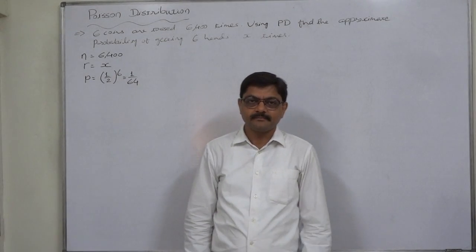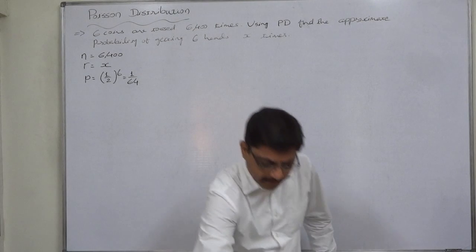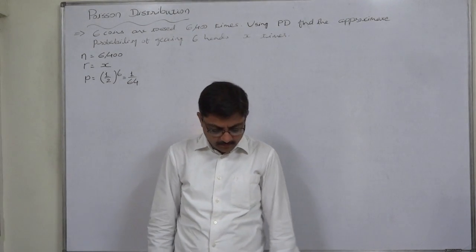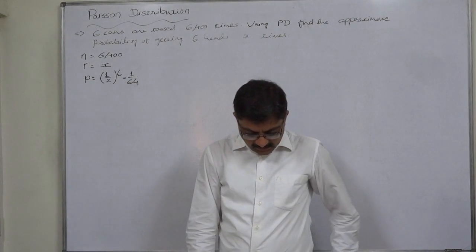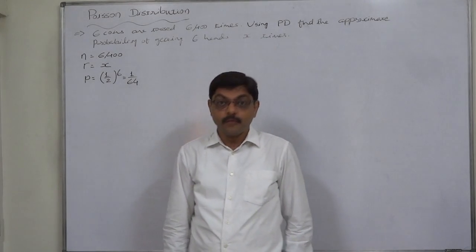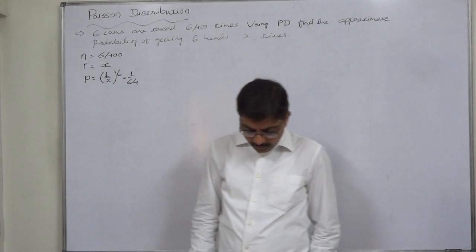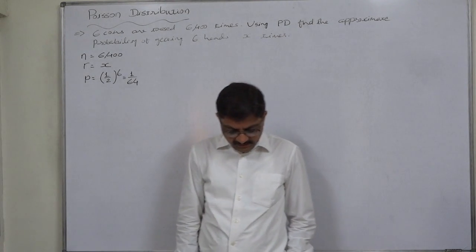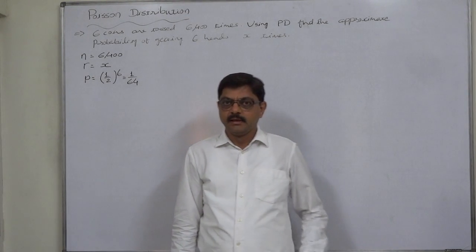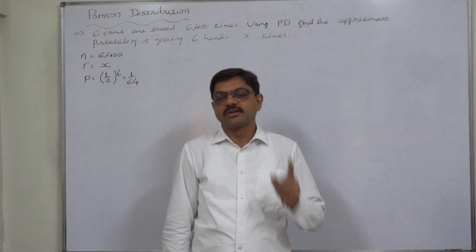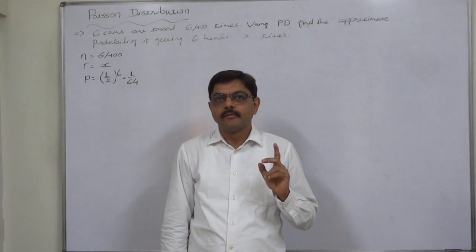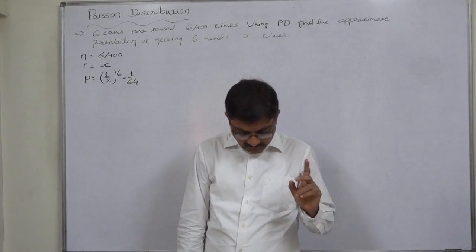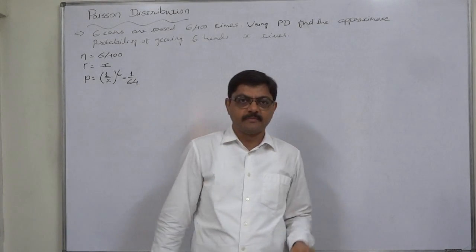Hello and welcome. The new case in probability distribution and in Poisson distribution is: 6 coins are tossed 6400 times. Using Poisson distribution, find the approximate probability of getting 6 heads x times. On all the 6 coins we want heads x number of times.